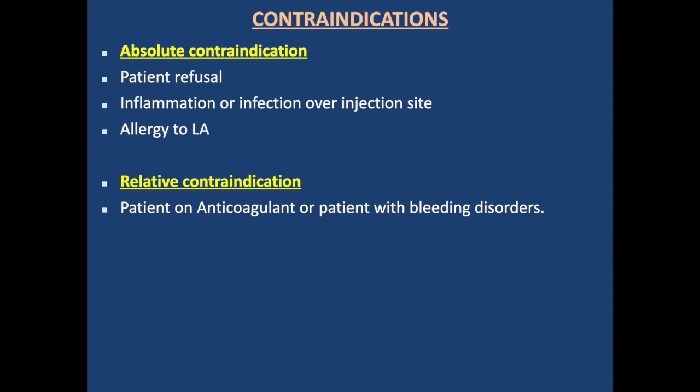Contraindications of intercostal nerve block include patient refusal, inflammation or infection over the injection site, and allergy to local anesthetic drugs. Relative contraindications include patients on anticoagulants or with bleeding disorders.